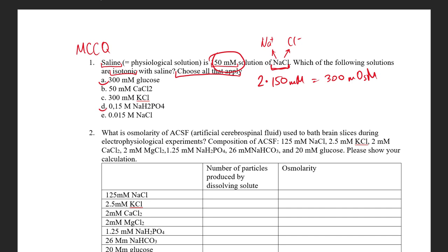So what are 300 milliosmoles here? Glucose, because it gives only one osmotically active particle. So the second one is not fine, this one is not fine, and this one is not fine. So what is 0.15?